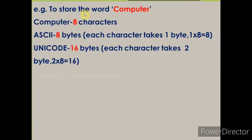Another example: the word 'Computer' consists of 8 characters. Using ASCII, it will take 8 bytes (1 byte per character). Using Unicode, it will take 16 bytes (2 bytes × 8 characters). In this way, the computer stores each character. If ASCII is used, 1 byte per character; if Unicode is used, 2 bytes per character.